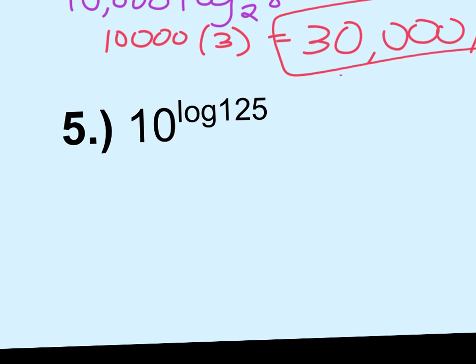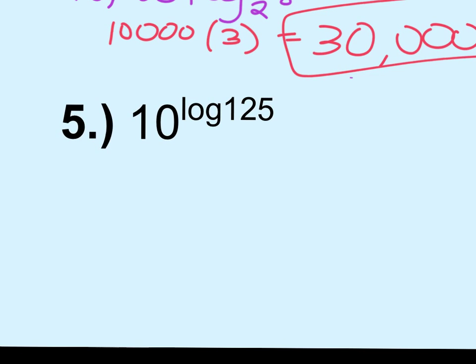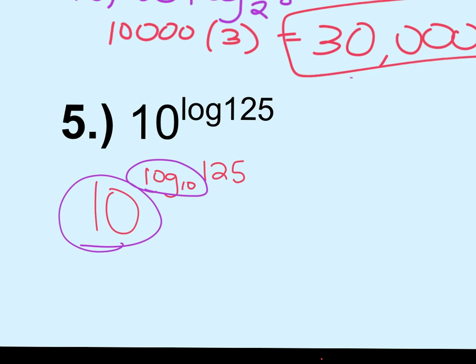All right, number 5. Now I've got 10 to the log 125. And so if it says log, what is the base of that log? 10. So this is 10 to the log base 10 of 125. And the same rule applies in the reverse order. If the base here is the same as the base on the log, I can cancel them out and keep the 125.